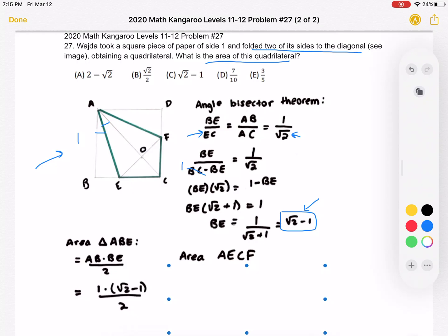And now it's pretty easy for us to find the area of quadrilateral AECF. This is the area of the entire square ABCD minus 2 times the area of triangle ABE, and that's what we just found over here. This is the area of triangle ABE.